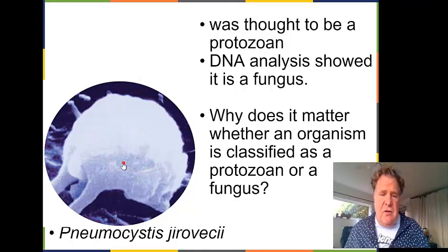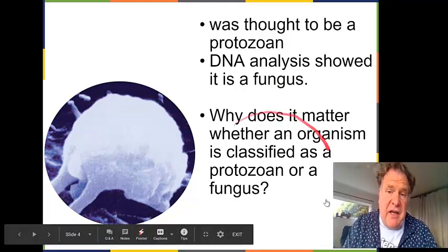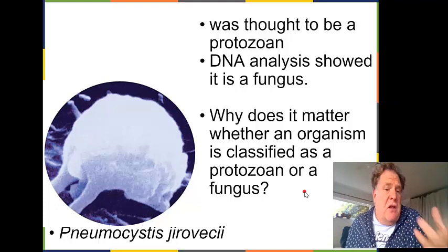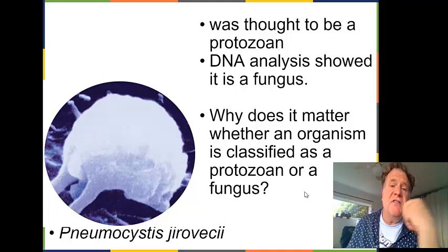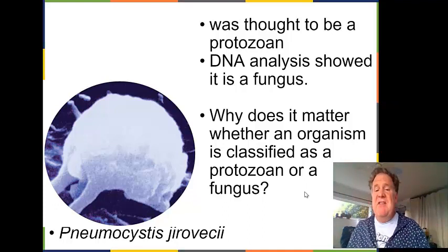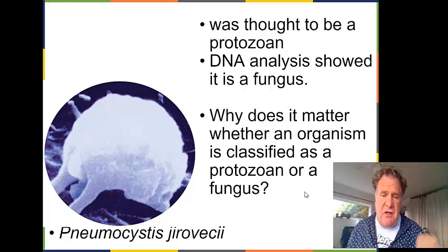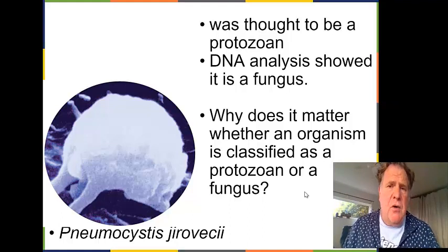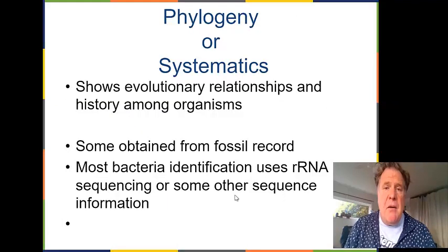This is a picture here of Pneumocystis jirovecii. This was thought to be a protozoan, but when we did the DNA analysis we showed that it's a fungus. Why does this matter? Well, if this organism is a pathogen, if it's more like a fungus then our antifungal medicines are going to work a lot better than the antiprotozoans. So if we thought it was a protozoan and treated it like one, we may miss out.